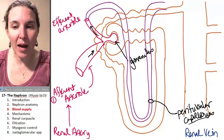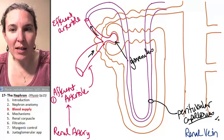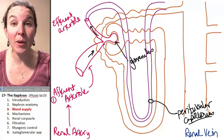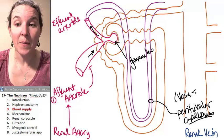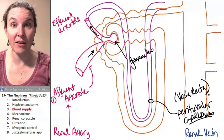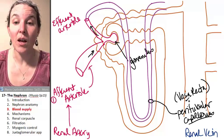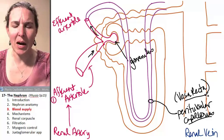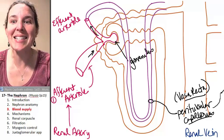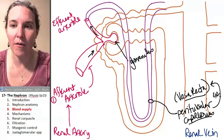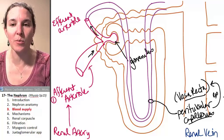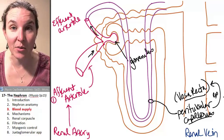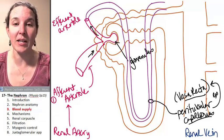Peritubular capillaries — in some nephrons, there is a very long peritubular capillary called the vasa recta, and this is also significant for understanding function. So keep in mind that the vasa recta is a specific example of a peritubular capillary. We're going to talk about the vasa recta again.